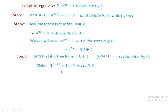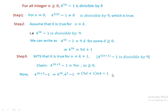Starting from the left-hand side of our claim, that is 4 to the power of 3k plus 3 minus 1, and applying the rule for exponents, this becomes 4 to the power of 3k times 4 to the power of 3 minus 1. Substituting from Step 2, 4 to the power of 3k becomes 9d plus 1, and 4 to the power of 3 is 64. This equals (9d plus 1) times 64 minus 1, and multiplying out gives 9d times 64 plus 64 minus 1. Since 64 minus 1 is 63, we have 9d times 64 plus 63.